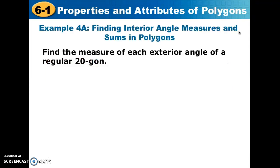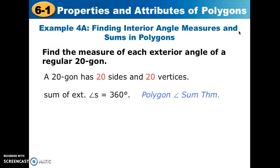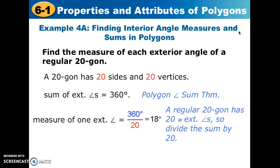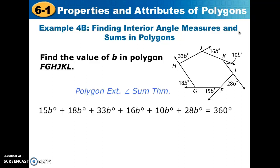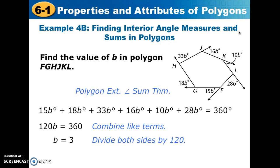In example number four, we want to find the measure of each exterior angle of a regular 20-gon. There are 20 sides, the exterior angles total 360 degrees, so we divide 360 by 20. Each exterior angle measures 18 degrees. In the next part, we have a polygon with expressions for each exterior angle. We set up an equation where all exterior angles add up to 360, combine like terms, and solve for the unknown, getting b = 3. In this example we only needed to find b, not the individual angle measurements.